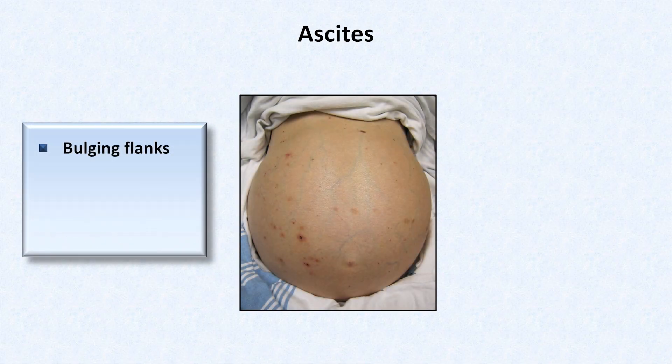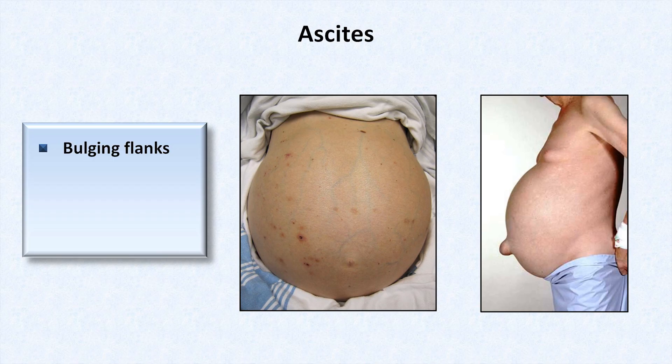Ascites has its own set of physical findings, independent of the presence or absence of cirrhosis. First is an abnormal contour to the abdomen, often referred to as bulging flanks, as seen here. From contour alone, it may be impossible to distinguish ascites from massive bowel distension, but it's usually distinguishable from obesity. In obesity, adipose tissue is deposited circumferentially; the anterior and posterior sides receive roughly the same amount of excess tissue. In ascites, the peritoneal cavity only extends posteriorly so far, thus the apparent distension only extends so far as well. This is easier to see from the side when the patient is standing.